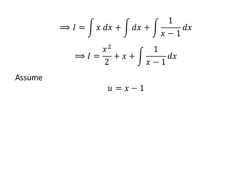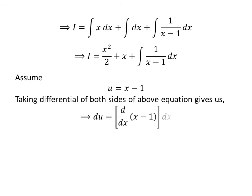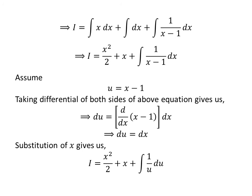We will solve the integral of 1 upon x minus 1 by substitution method. Assume u is equal to x minus 1. Taking the derivative of both sides, we get du is equal to the derivative of x minus 1 with respect to x times dx. The derivative of x minus 1 with respect to x is 1, so du is equal to dx. Substituting x minus 1 by u and dx by du, i becomes x squared upon 2 plus x plus the integral of 1 upon u with respect to u.